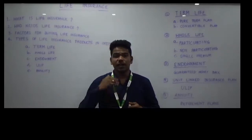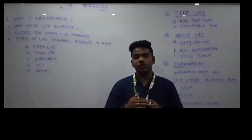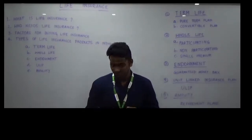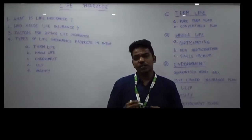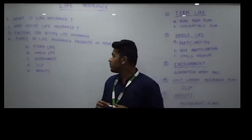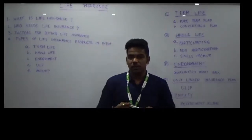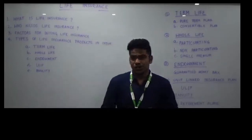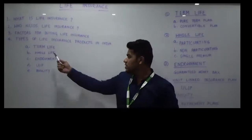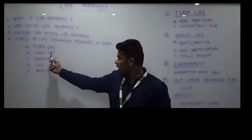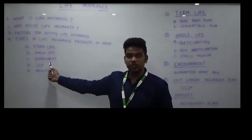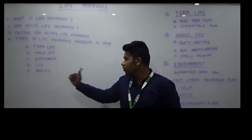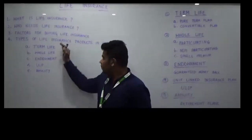The fourth factor is the age group — at what age you are trying to buy life insurance. The earlier you buy, the more beneficial it is later on. You should buy life insurance as early as possible to get higher income and higher benefits on any insurance plan. Now let us understand the different types of life insurance products in India. There are five types: term life, whole life, endowment, ULIP, and annuity.